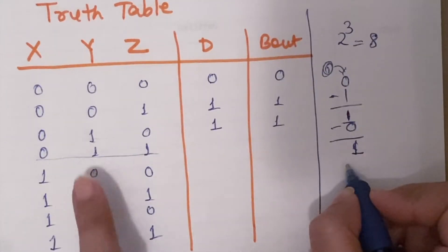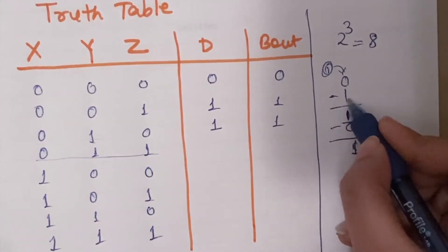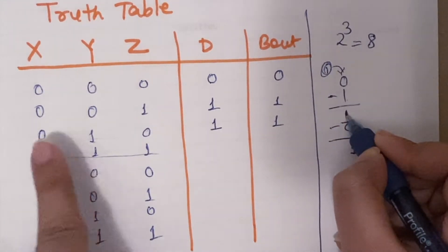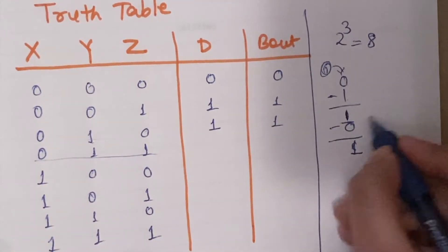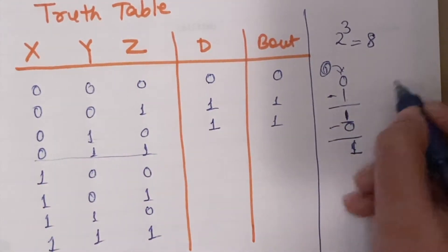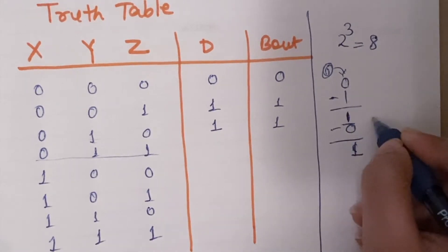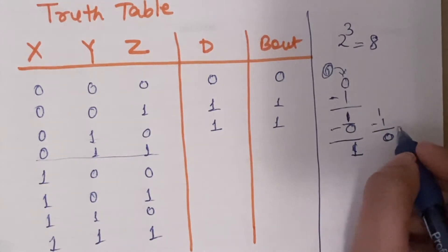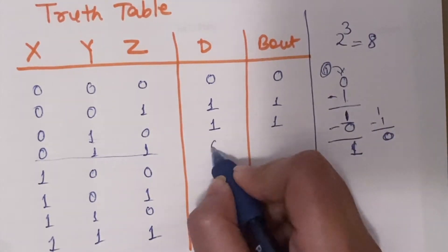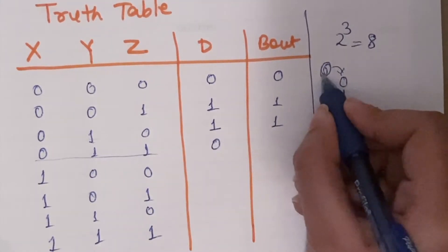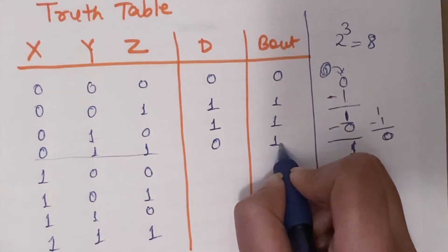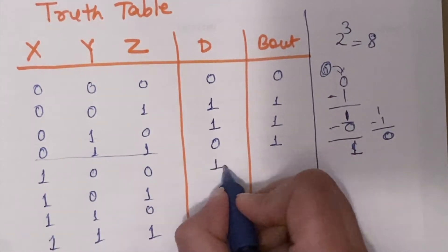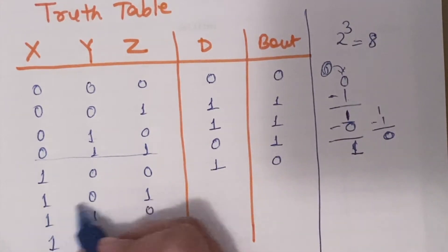For 0 minus 1, the output difference is 1 and the borrow is 1. For 0 minus 1 minus 1: here we do minus 1, then 1 minus 1 equals 0, so the difference is 0 and the borrow is 1.